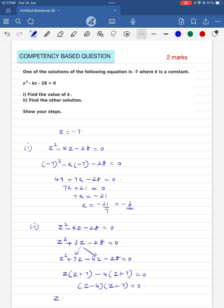So the value of z is either 4 or minus 7. One of the solutions was given already as minus 7. So the other zero or solution is 4.